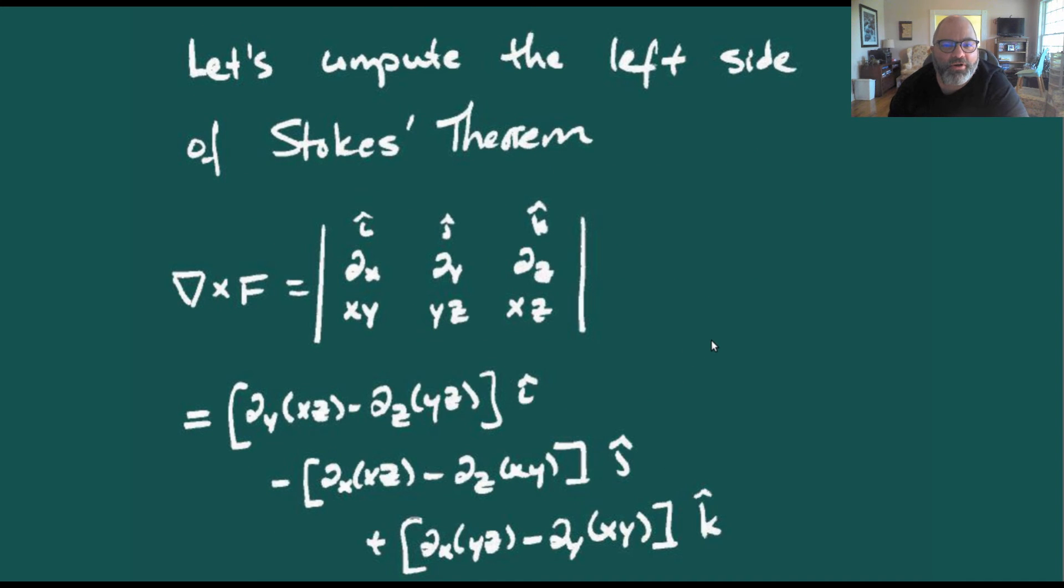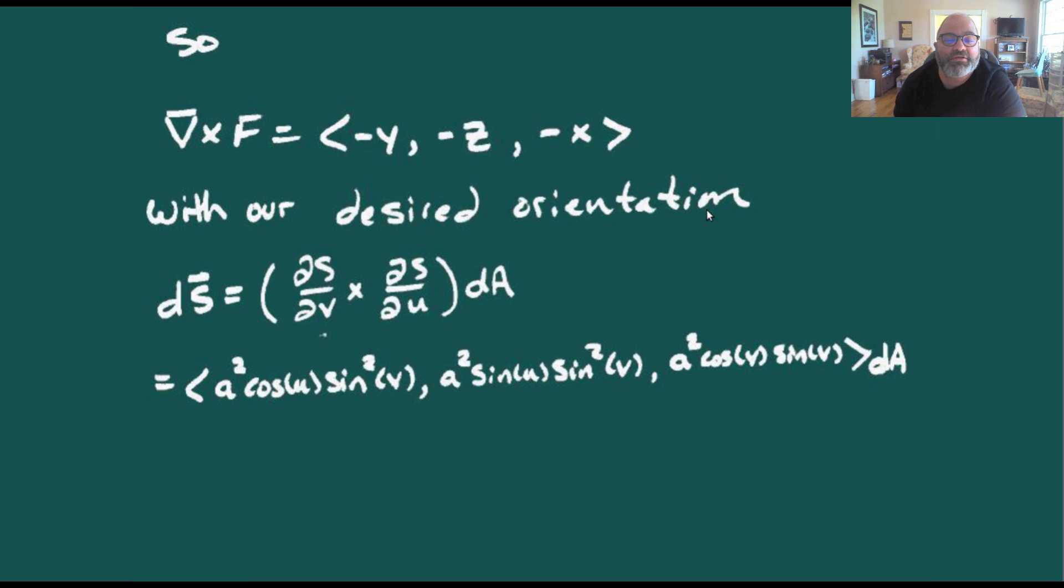Let's compute the curl to verify both sides. Computing curl(F) for F = (xy, yz, xz), we take the partial derivatives with respect to x, y, and z. This gives us curl(F) = (-y, -z, -x).